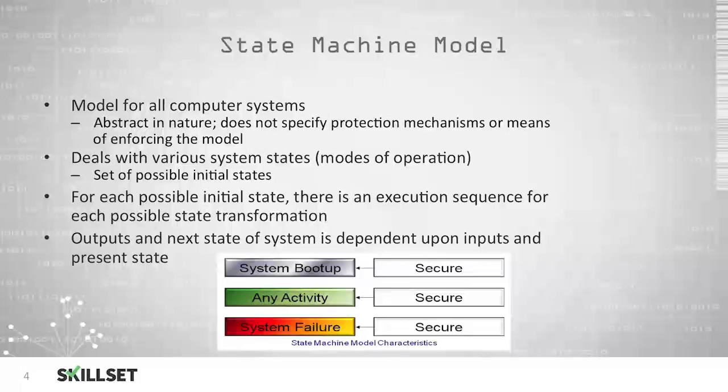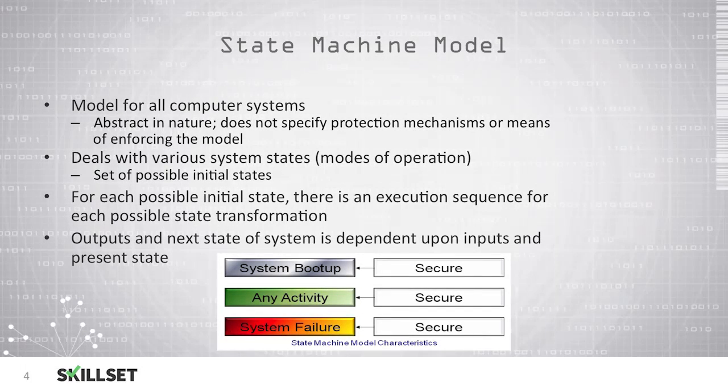The state machine model is an abstract model used by all computer systems. It does not specify specific protection mechanisms or means of enforcing the model. It deals with various states of operation or system states, and it has a set of values for each of these initial states. Depending on the state the system is operating in, there's a sequence of events that must be performed before the system can transform into the next state. And the output and the next state depends on the inputs and the present state.